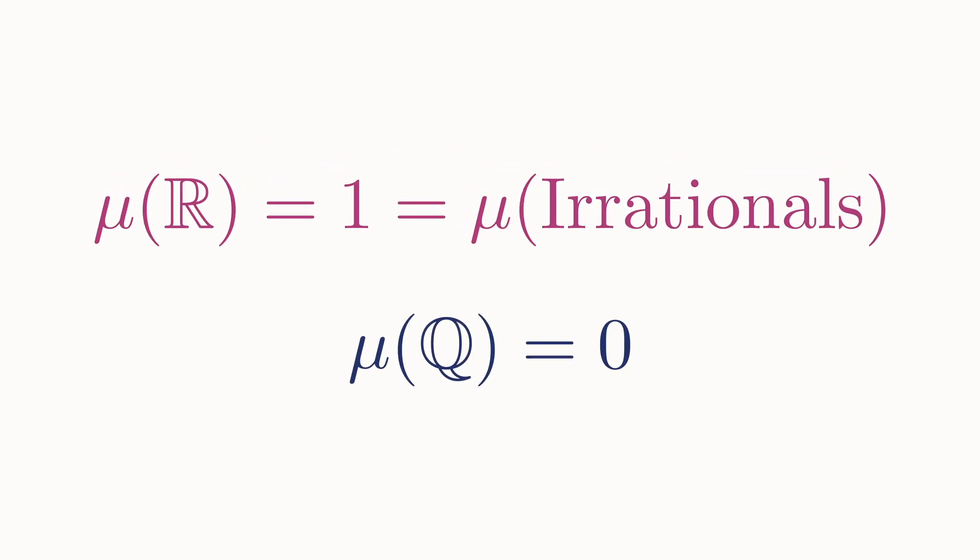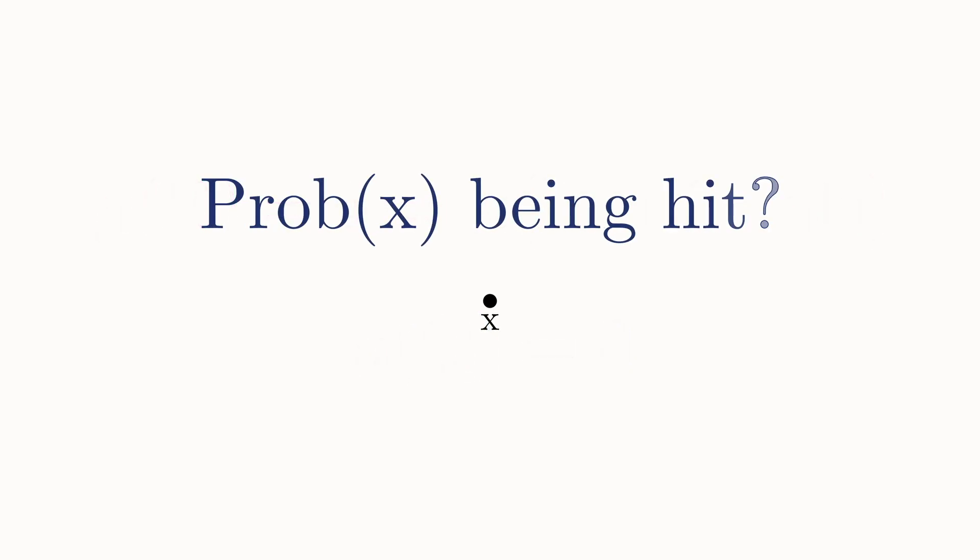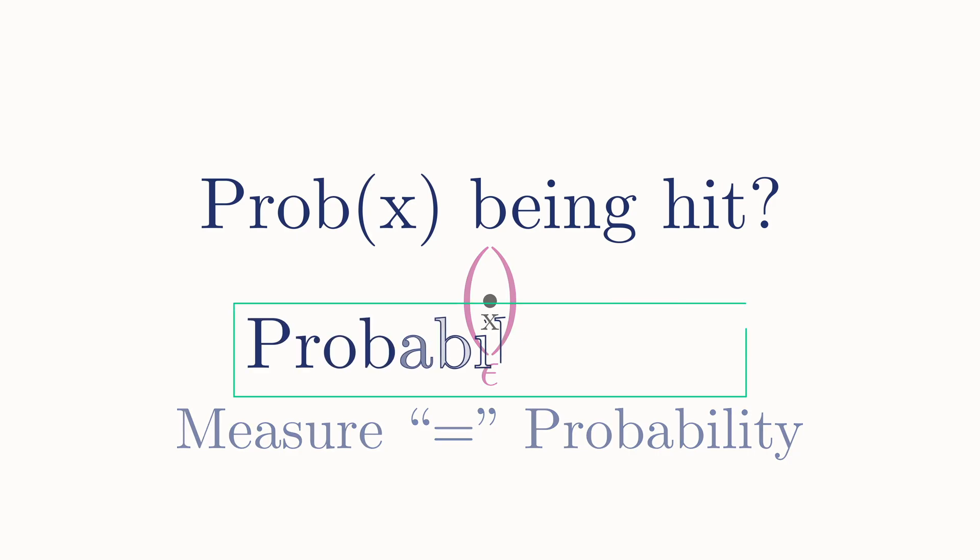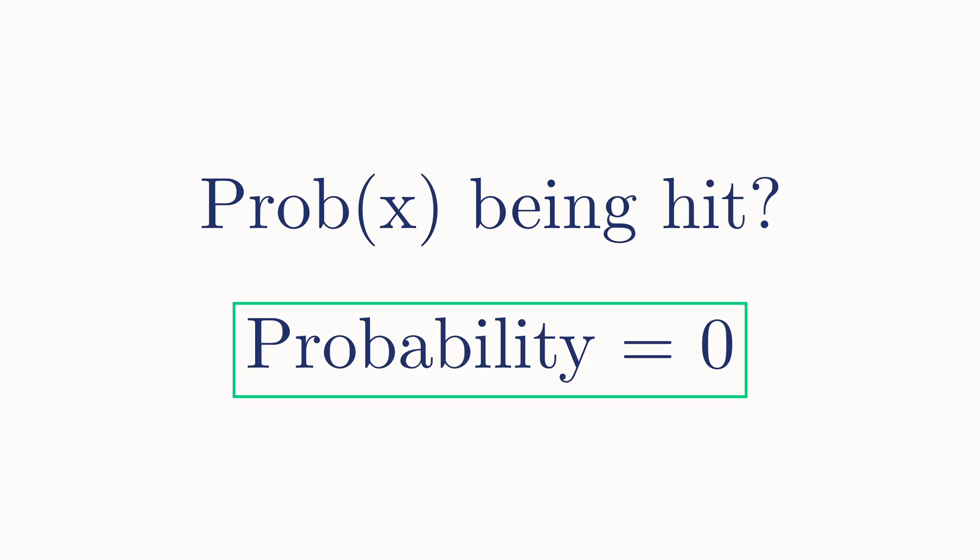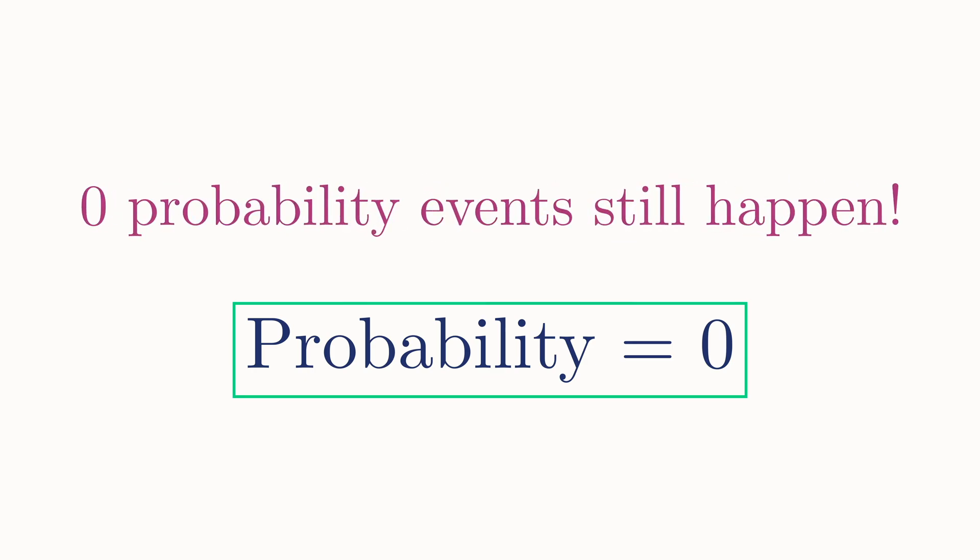So now that we know the measure of each of these sets, we can finally answer the three questions we posed at the beginning of the video. First, a single point can always be covered by an interval of any arbitrarily small size, so its measure must be 0. And since the measure of a subset is the same as the probability of a randomly chosen point being in that subset, this means the probability of any particular point being hit is 0. So even though you are guaranteed to hit some point, any particular point has 0 probability. This is one of those strange ideas in probability theory that leaves you scratching your head when you first encounter it. Events with probability equal to 0 can still actually happen.